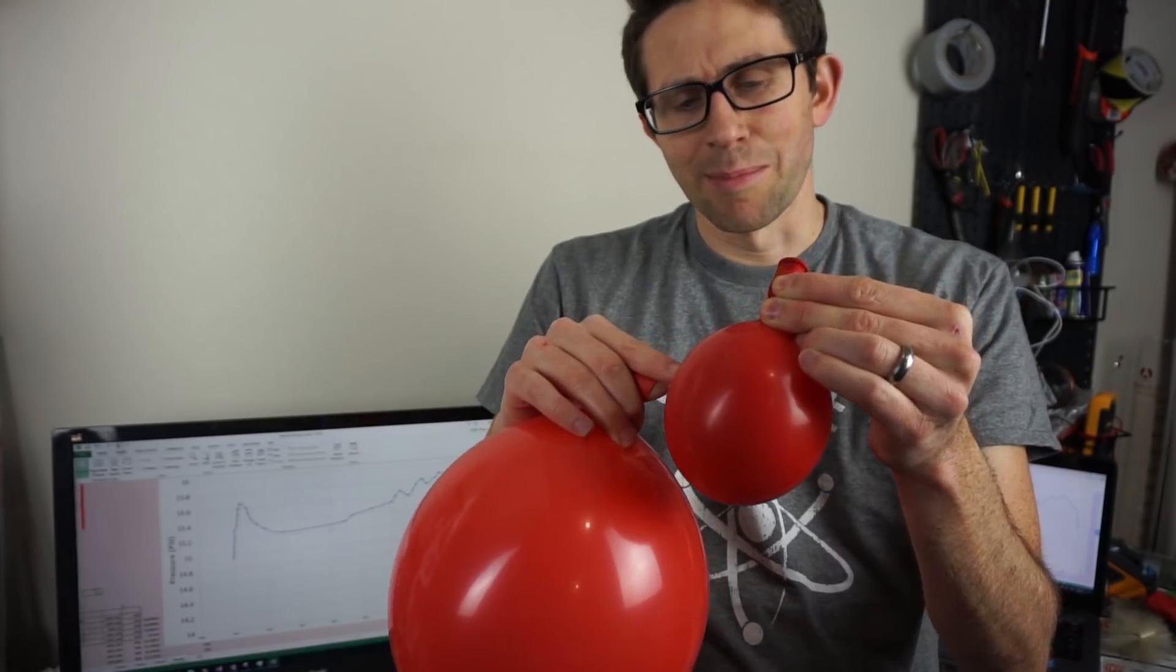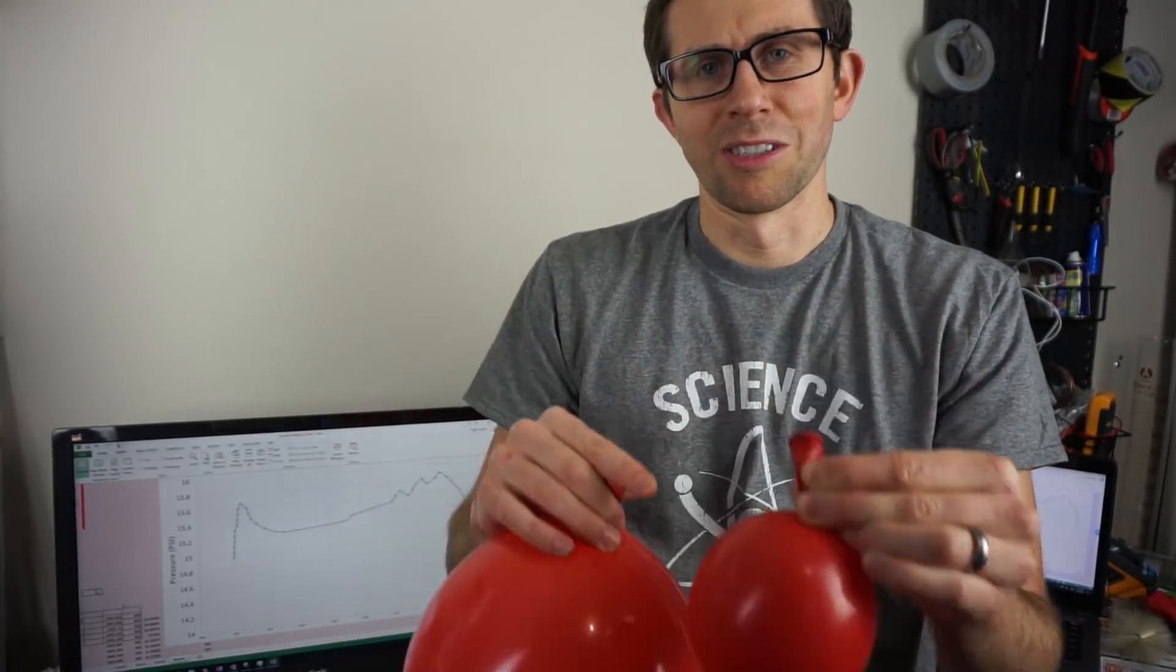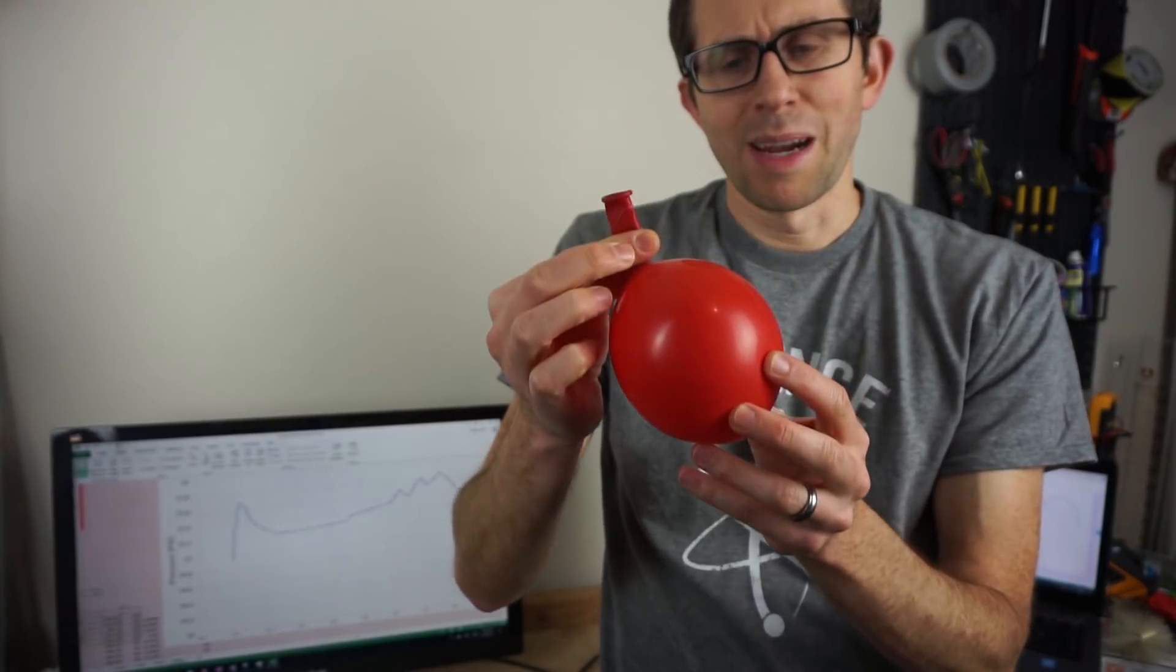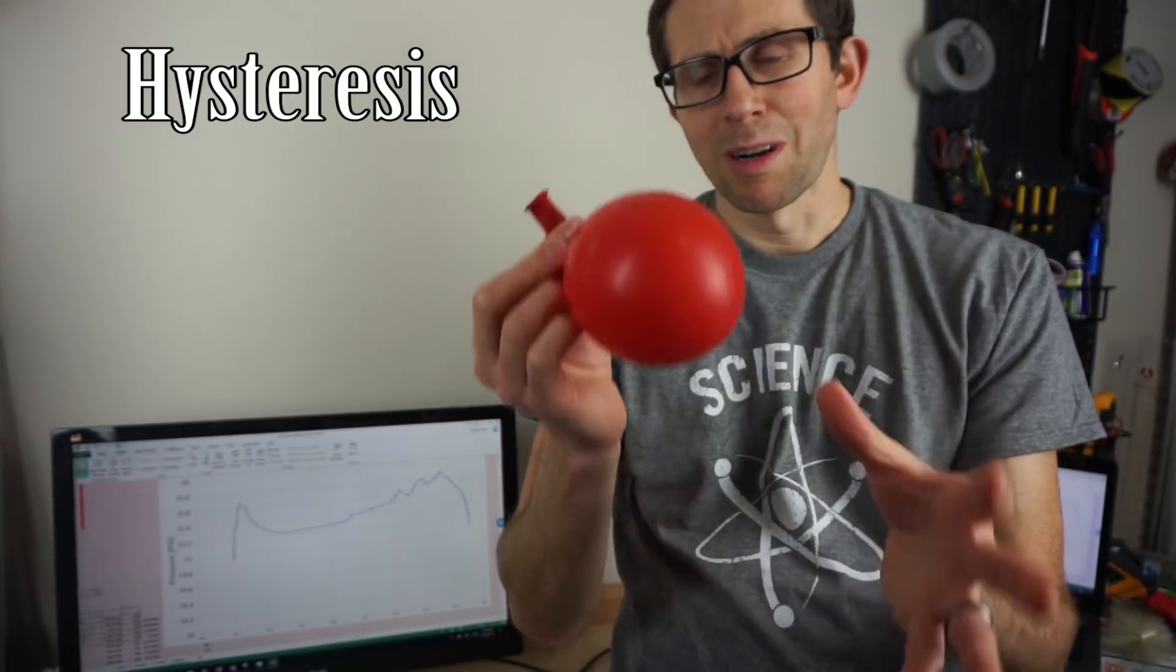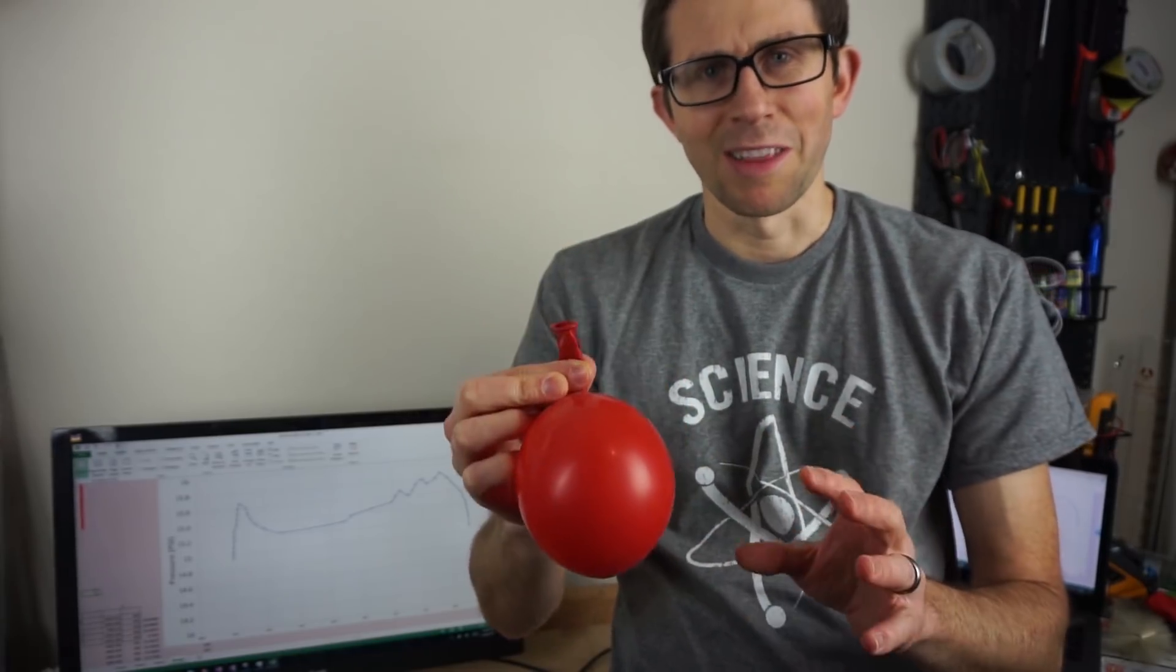And that means that the balloon actually has a memory of what you were doing before you took the pressure measurement inside of the balloon. And when a material has a memory like that, it's called hysteresis. So rubber exhibits elastic hysteresis. Let me explain what that means.